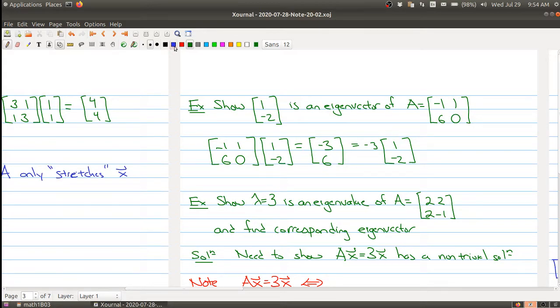We're actually getting a little bit more information here is that lambda equals -3 is the associated eigenvalue. So yes this is an eigenvector and this is how you check whether something's an eigenvector. Just multiply by the matrix and see if you get a scalar multiple of something.